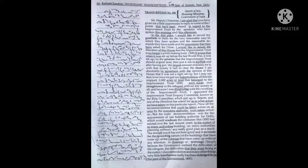I am absolutely in agreement with the opinion of this house that it was not a right step. But I may say that ever since we got our independence, all this has stopped. 2,000 acres of land that belonged to the Improvement Trust were made over straightaway to the refugees without any money at all.